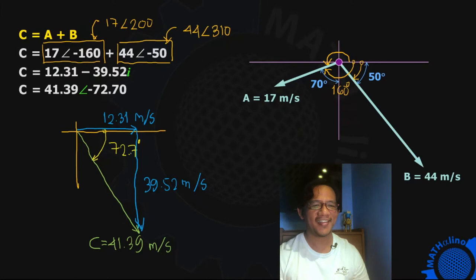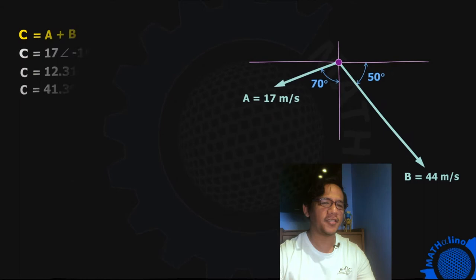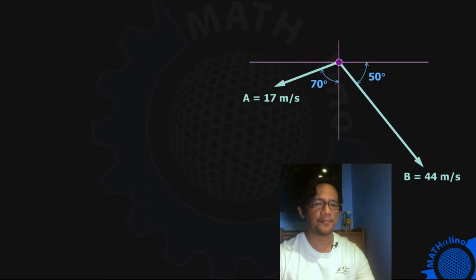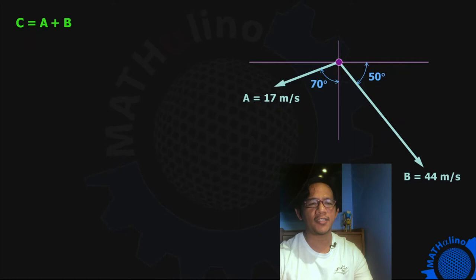Now let us go to our traditional solution, which is the component method. This is the favorite of most students because of their training in the academy. C is equal to vector A plus vector B. For the component method, let us solve for the X component separately from the Y component of the resultant.